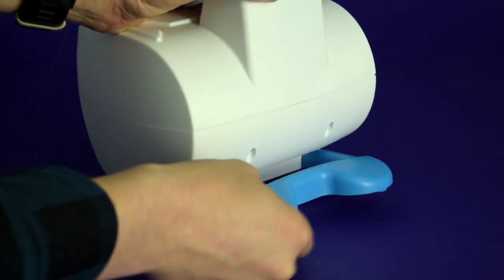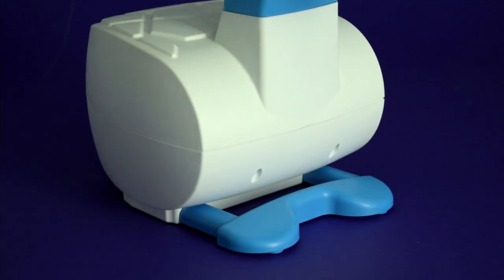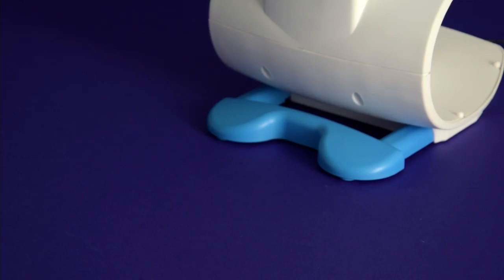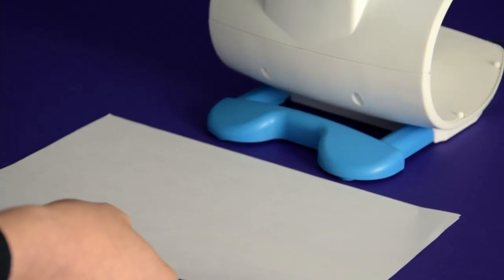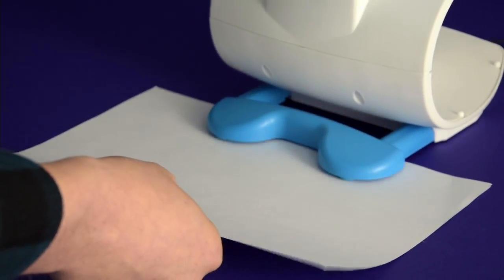Pull out the blue legs at the bottom. They will help keep the SmartSketcher stable. Under the blue legs, slide some sheets of paper and the legs will hold the paper in place.